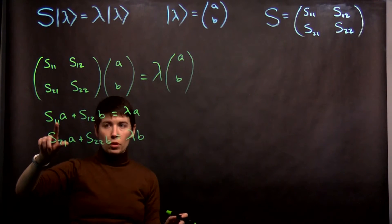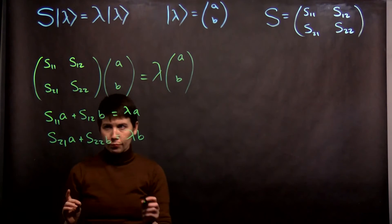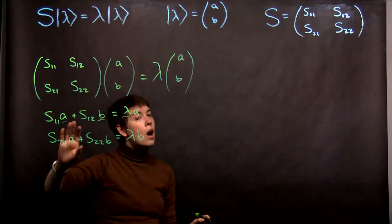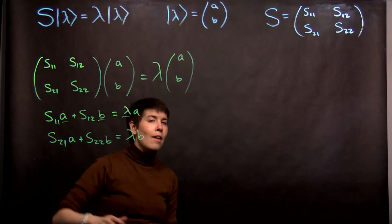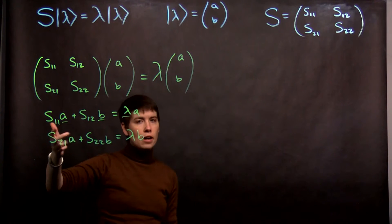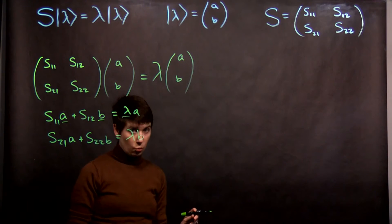Now, S11, all of these S values are known. We have a problem though. Notice that we have three unknowns: A, B, and lambda. I have two equations here. What that means is you don't have enough information to solve this. If this is how you started, you would hopefully go here and say, I need a third equation.